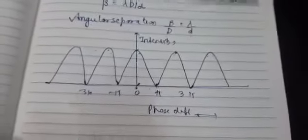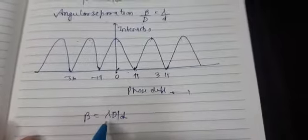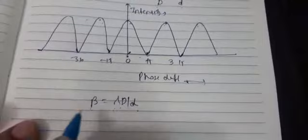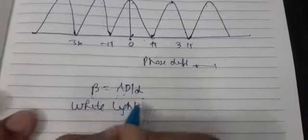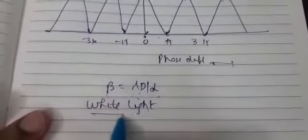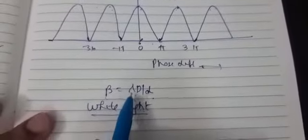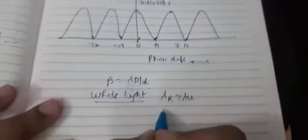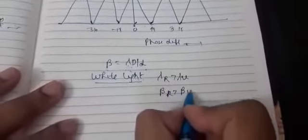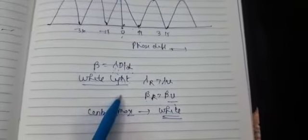If instead of monochromatic light, white light is used, the fringe width differs for each color since wavelength varies. The central maxima will be white, but on both sides, colored patterns appear, with red having the widest fringes. That is why we prefer monochromatic light — to avoid overlapping of different color patterns.